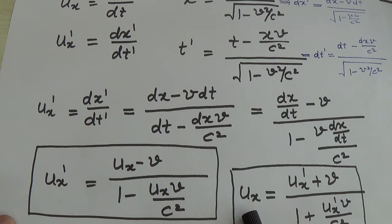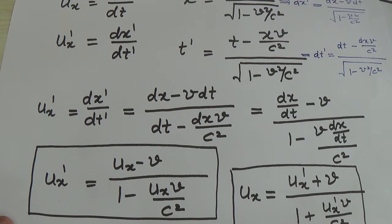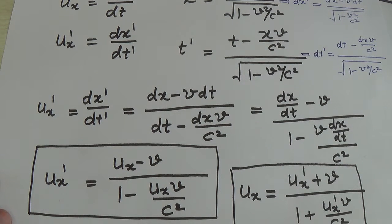And ux is equal to ux prime plus v upon 1 plus ux prime·v upon c squared. This is the inverse, derived using the inverse Lorentz transformation. If you have to find out ux, then that will be ux prime plus v upon 1 plus ux prime·v upon c squared.